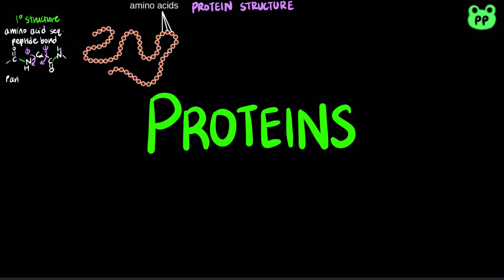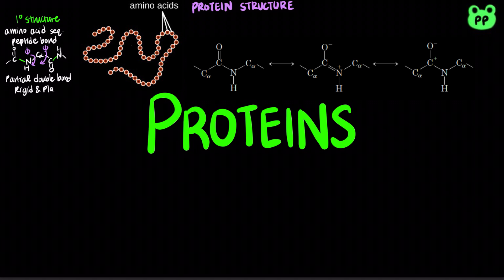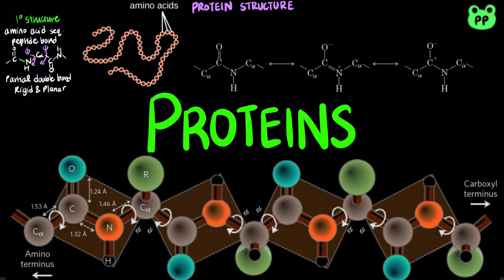The peptide bonds, illustrated in green, have some double bond character due to resonance, making them rigid and planar.